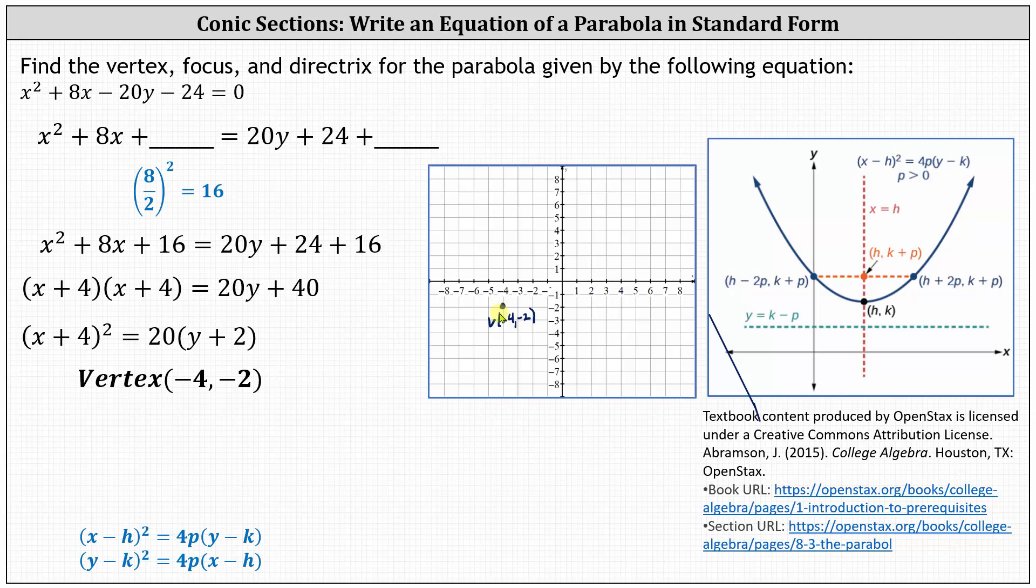Going back to our equation, notice four p is equal to 20. So four p is equal to 20. We divide both sides by four, and we have p equals five. We now know the focus is five units above the vertex.